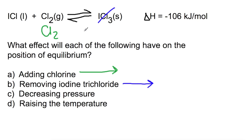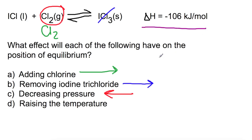If you were to decrease the pressure, then the equilibrium will try to produce more gas. That means, in this case, we're producing more chlorine, and that will push your equilibrium to the left. Finally, looking at raising the temperature, you need to consider the enthalpy change. This is an exothermic reaction, which means that we produce heat. So if you add heat into the reaction, that's unfavourable — it will favour the endothermic reaction, which is the backwards reaction.